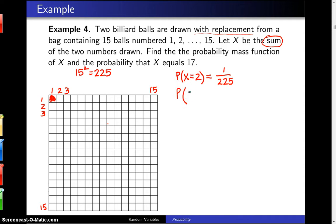Next, the probability X equals 3. Well, how can you get a 3? You can get a 1 on the first draw followed by a 2 on the second draw, or a 2 on the first draw followed by a 1 on the second draw, so the probability there is 2 out of 225.